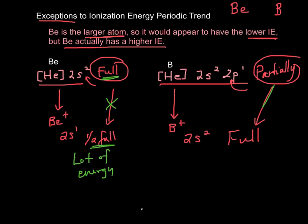In this case, this wants to happen. It's all happy about that. It wants to go from partially full to full, so this requires less energy. And that is why, even though boron is a smaller atom, and you would think it has a higher ionization energy, it has a lower ionization energy.